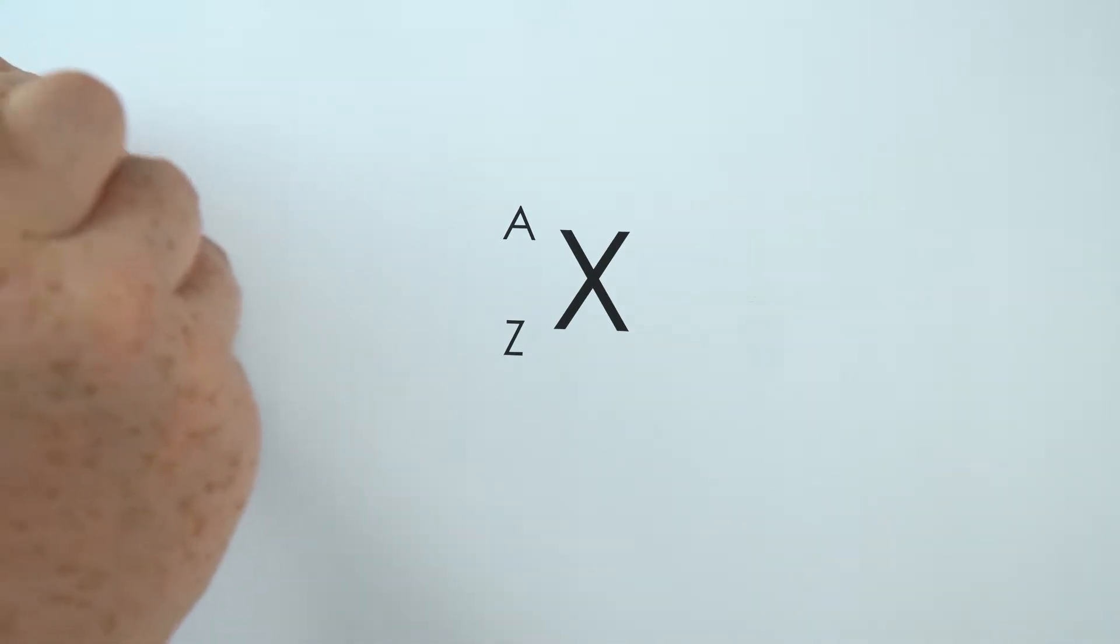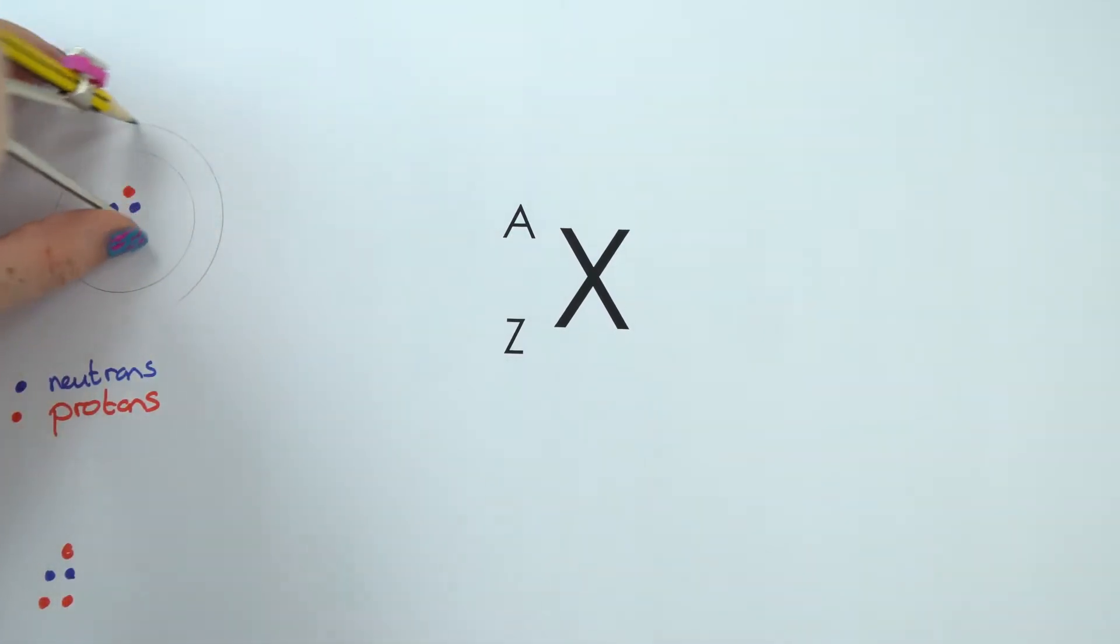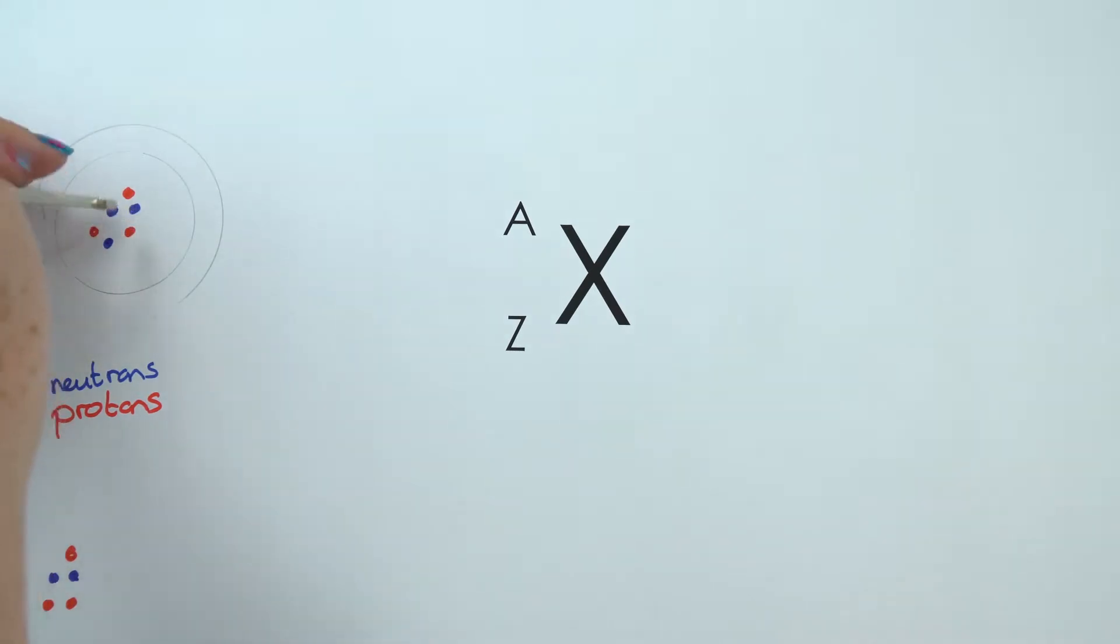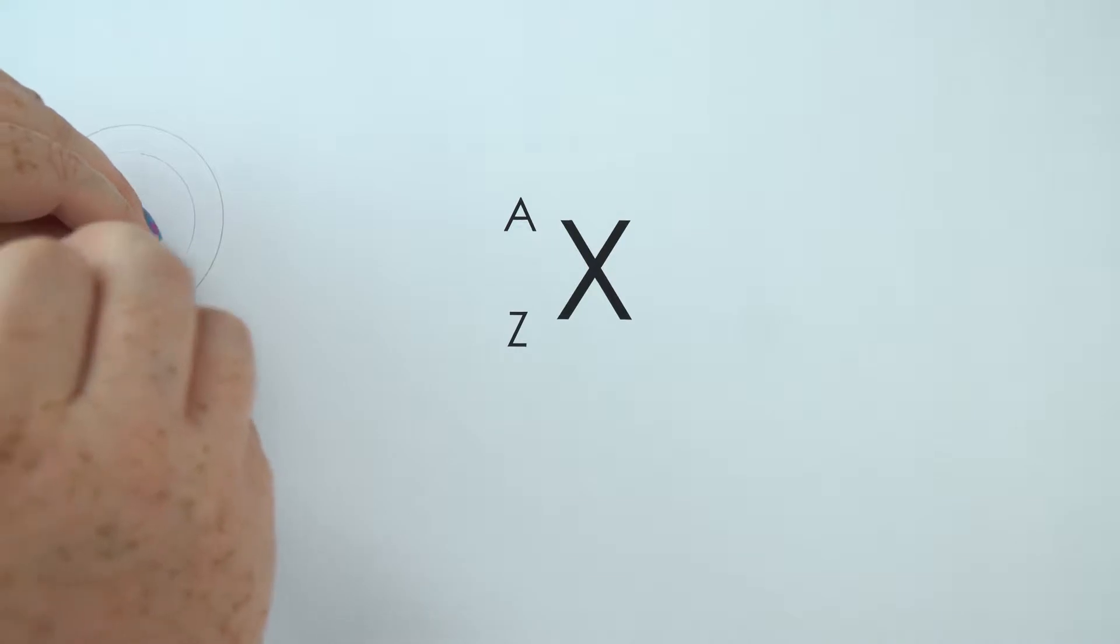We tend to have two electrons in the inner shell and then eight, eight, and so on. And it's the properties of these electrons in the outer shells that actually define some of the chemical properties of all of these different elements.